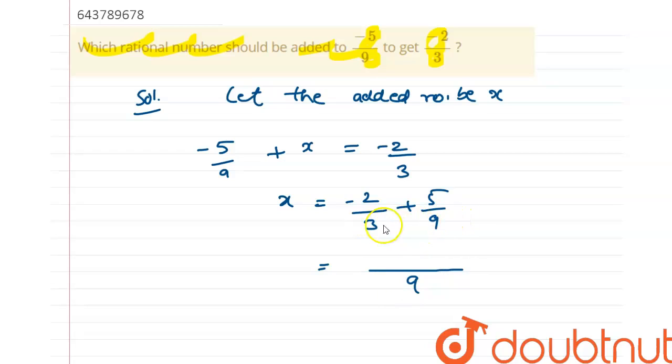Three multiplied by three is equal to nine, so minus two multiplied by three is minus six plus five. The answer is minus one by nine. So this is the answer. This number must be added to minus five by nine to get minus two by three. Thank you.